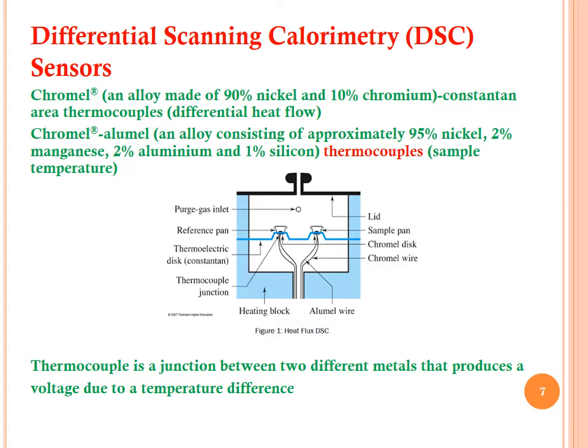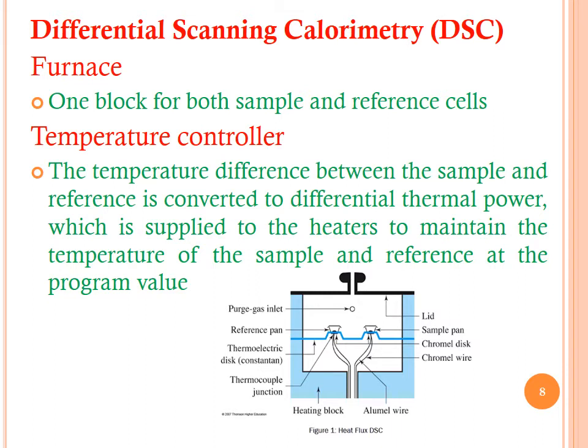Chromel-alumel thermocouples consist of an alloy of approximately 95% nickel, 2% manganese, 2% aluminum, and 1% silicon — they measure sample temperature. A thermocouple is a junction between two different metals that produces a voltage due to temperature difference. The furnace is one block for both sample and reference cells. The temperature controller converts the temperature difference between sample and reference into differential thermal power, which is applied to heaters to maintain the temperature at the programmed value.